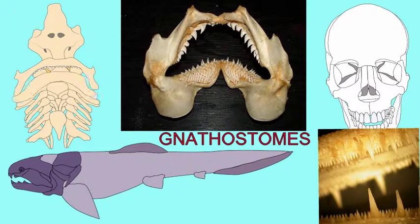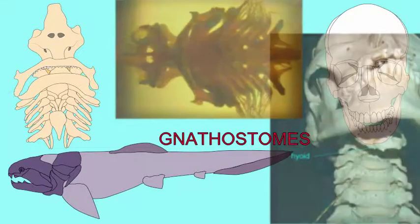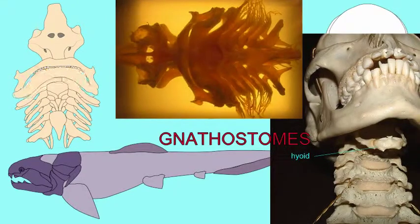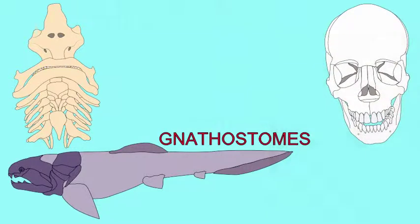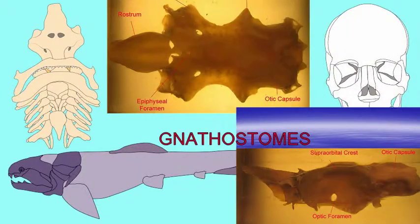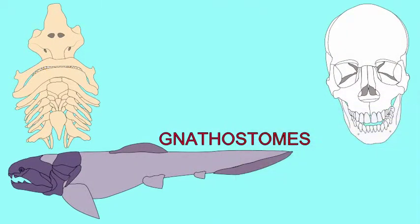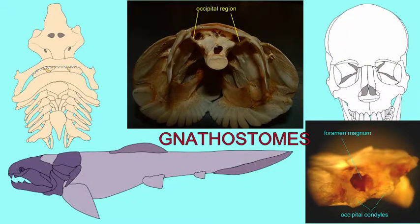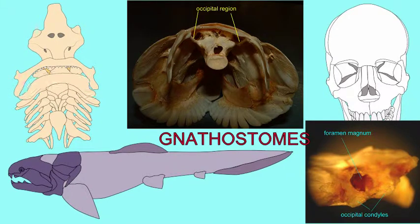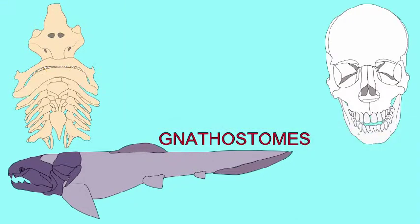No vertebrate had possessed true teeth prior to this. In addition, a hyoid arch coming from the cartilage around the gill arches, the otic capsule which surrounds the ear, and an occipital region in the back of the skull — including an occipital condyle and a foramen magnum for the spinal cord — are all elements of the skeletal system which the ancestors of sharks and humans evolved.